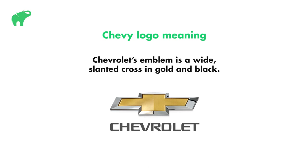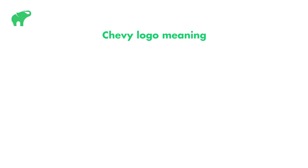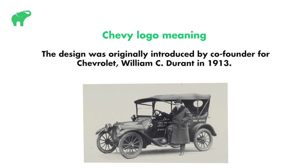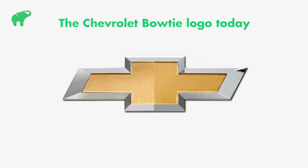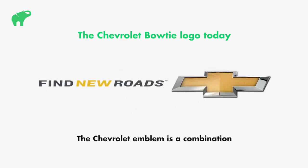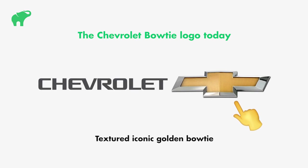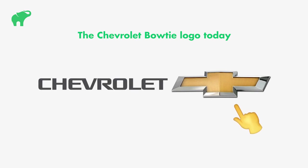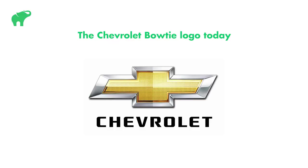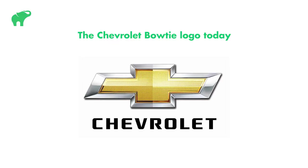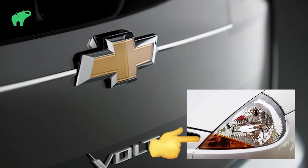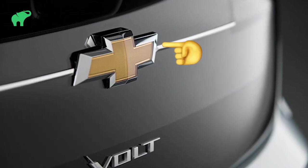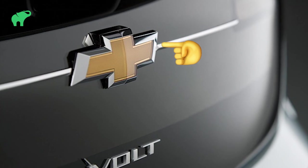Chevrolet's emblem is a wide, slanted cross in gold and black. The design was originally introduced by co-founder William Cripper Durant in 1913. The Chevrolet emblem is a combination of a textured iconic golden bowtie with a sleek chrome border. The textured gold seems to replicate the appearance of a set of headlights, while the silver framing adds an element of luxury and strength.